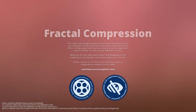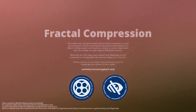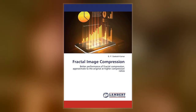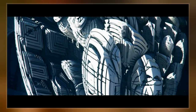Fractal compression is a lossy compression method for digital images, based on fractals. The method is best suited for textures and natural images, relying on the fact that parts of an image often resemble other parts of the same image. Fractal algorithms convert these parts into mathematical data called fractal codes, which are used to recreate the encoded image.